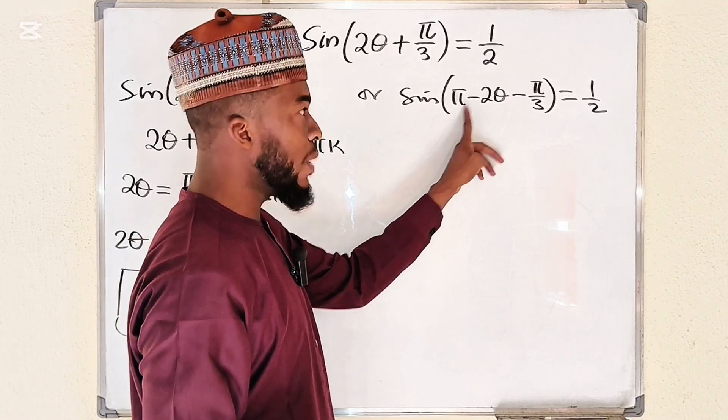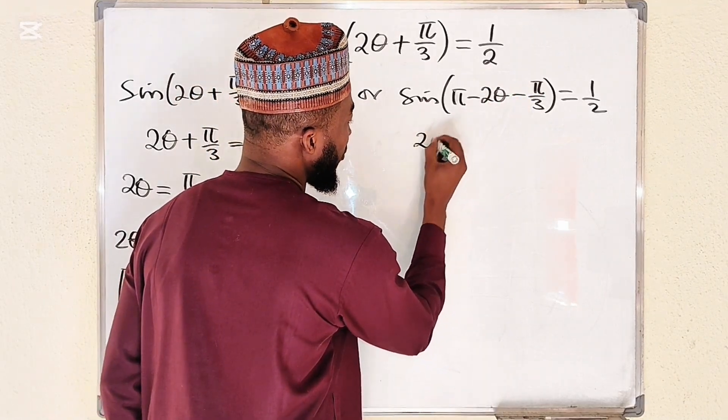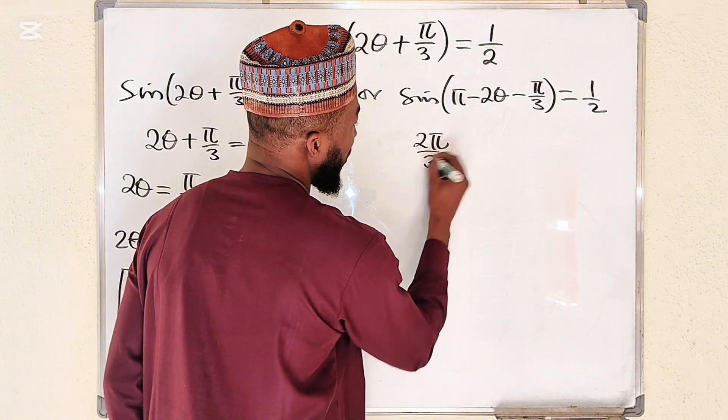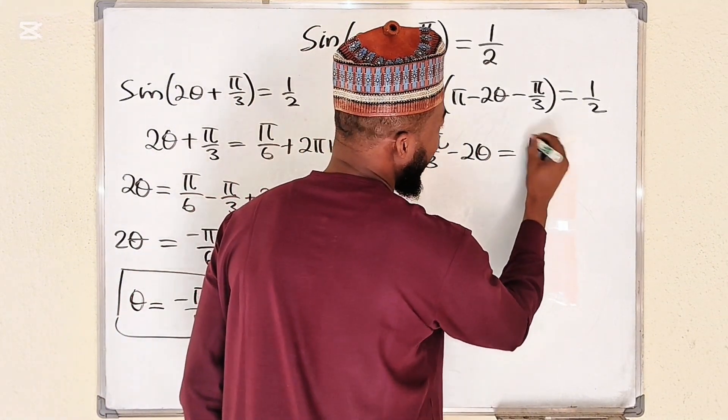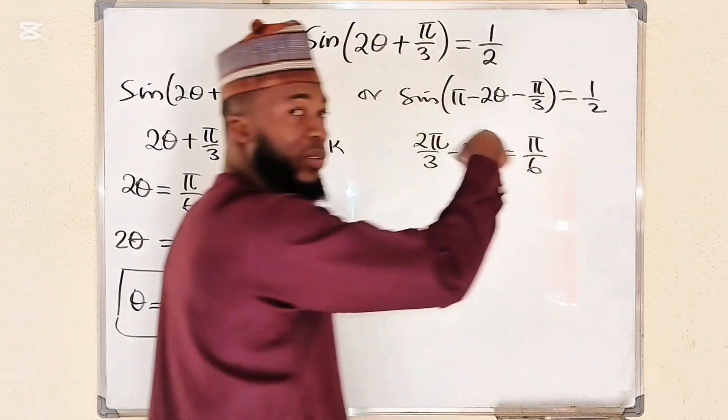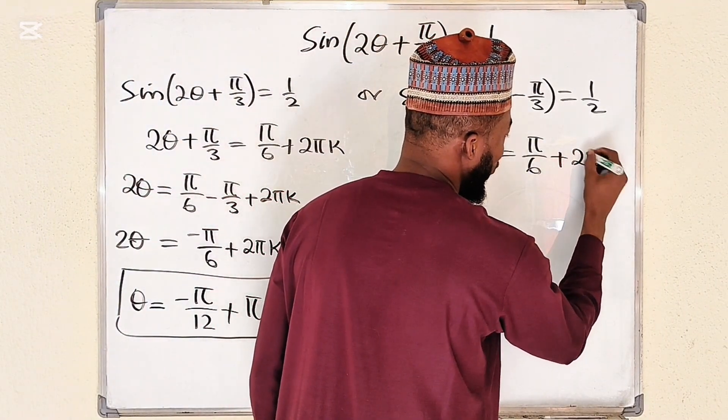Let me subtract this one from pi directly. It will be 3 times pi is 3 pi minus pi is 2 pi over 3. So we have 2 pi over 3 minus 2 theta, this is equal to pi divided by 6 as you take sine inverse of both sides. Remember to add multiples of 2 pi.